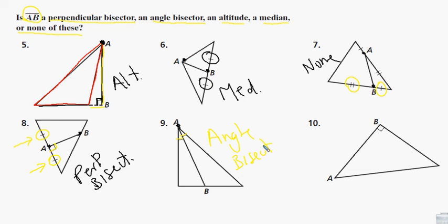And number ten. Let's see. A is a vertex, B is also a vertex. And more importantly, AB is perpendicular to another side. This time, AB is actually part of the triangle, but that's okay—there's no rule against that. It goes through a vertex and is perpendicular to the opposite side, so it's an altitude.